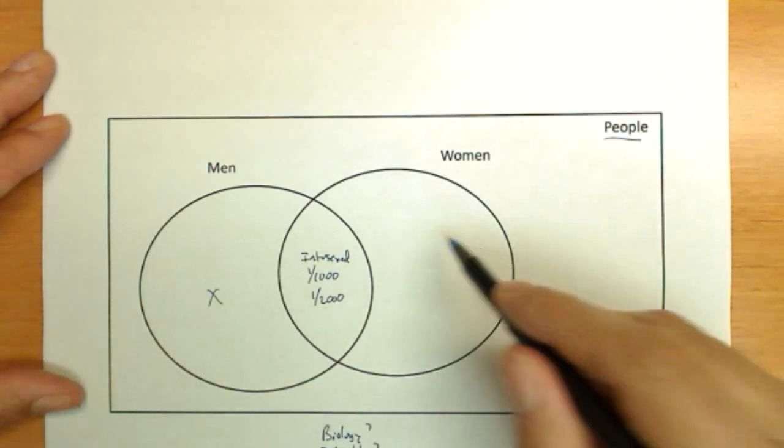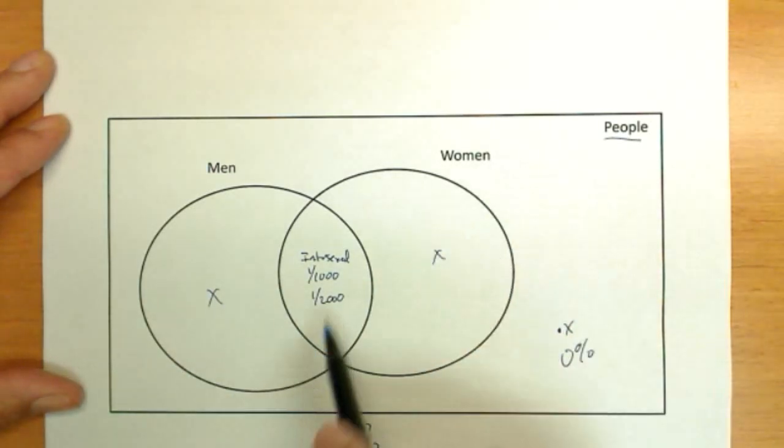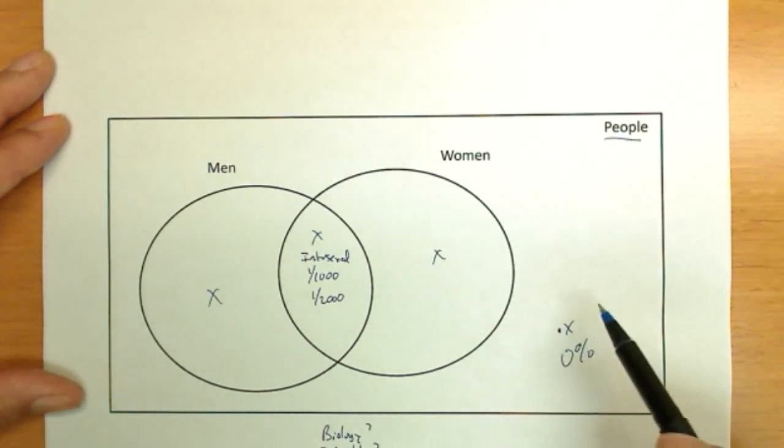So this would be distinctly man who is not a woman. This would be a woman who's not a man. This would have biological components of both. And this would have no biology of either one, men or women, if we are speaking specifically of biology.